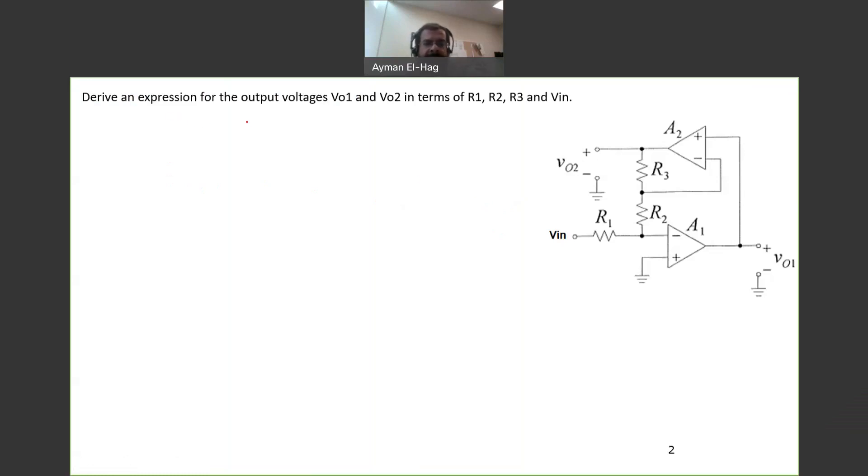The question asks to derive an expression for the output voltages VO1 and VO2. So we have two output voltages, VO1 and VO2, so we have two op-amps.